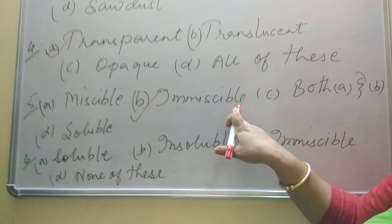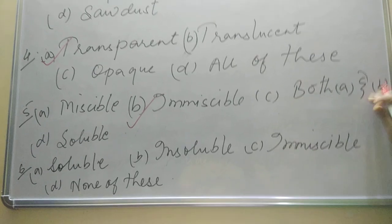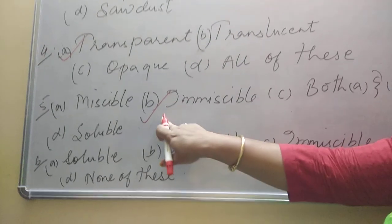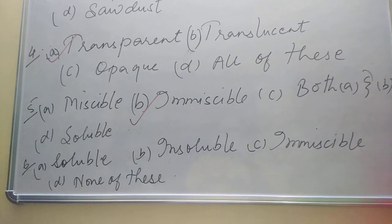So the option will be immiscible, and the soluble word, definitely it will not come. So the word should be immiscible, and both A and B is the wrong option. So option will be immiscible.